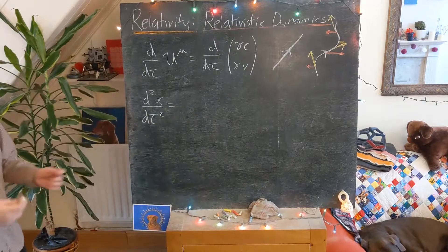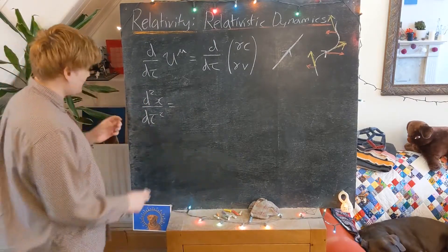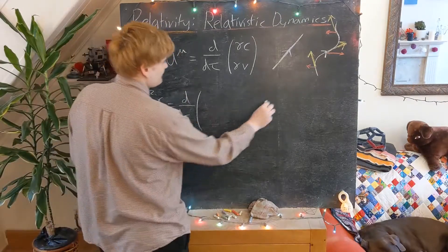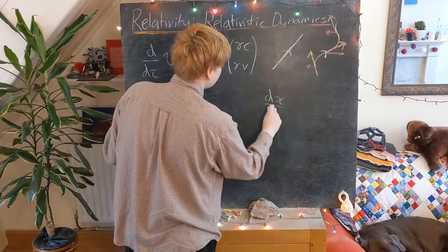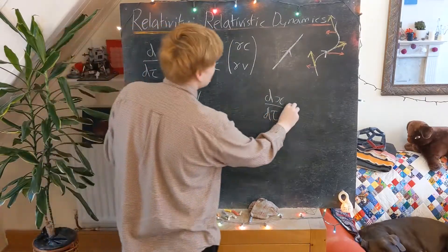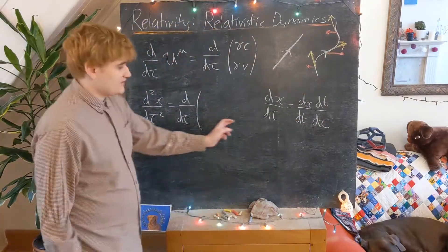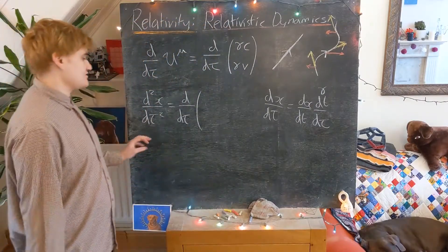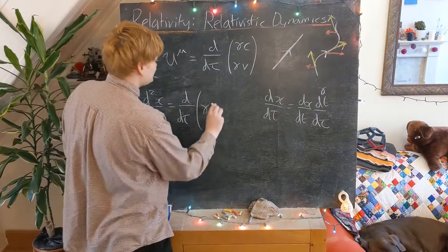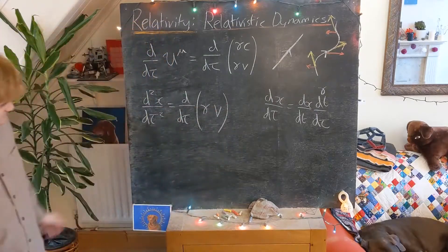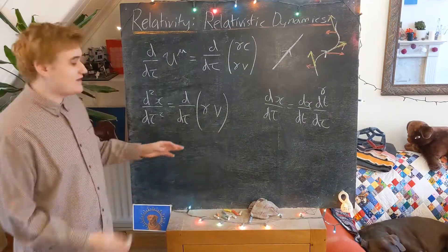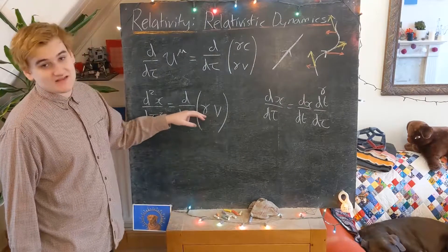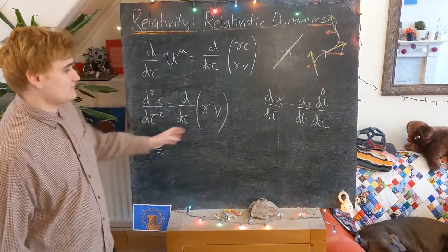So the second tau derivative of our position, x. If we remember what our first tau derivative was, we saw that the dx by d tau, we could rewrite using the chain rule, which then introduces our factor gamma. And so now this second derivative, we can just already write now just as our derivative of gamma v. And so in the first video, I just simply treated this gamma as a constant, but we now can't do that, and we have to treat it as something that also depends on x and t.